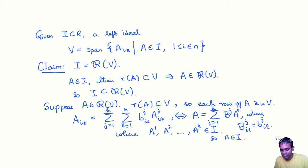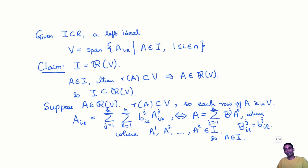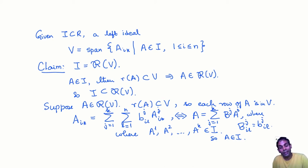We proved that R(V) is contained in I, so R(V) equals I. This shows that every left ideal in R is of the form R(V) for some vector subspace V of K^N. A similar argument using columns instead of rows shows that every right ideal is of the form C(V) for some subspace V of K^N.